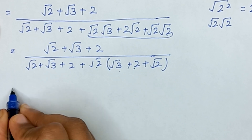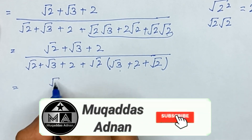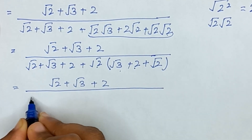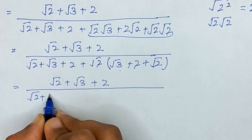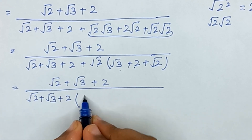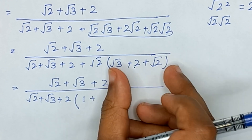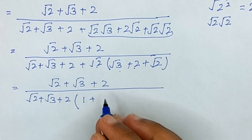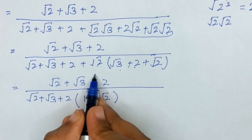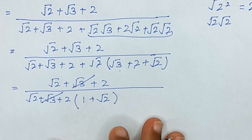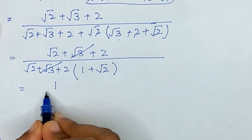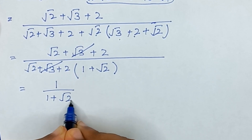We take the common term square root of 2 plus square root of 3 plus 2. This divided by this gives square root of 2 plus square root of 2 plus square root of 2. Since the numerator and denominator have the same term, they cancel out. So from here we have 1 divided by 1 plus square root of 2.